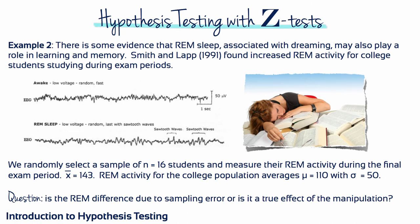Example 2: There's some evidence that REM sleep, which is normally associated with dreaming, may also play a role in learning and memory. Smith and Lapp found increased REM activity for college students studying during exam periods. We randomly select a sample of n equals 16 students and measure their REM activity during the final exam period, and get a sample mean of 143. REM activity for the college population averages 110, with a standard deviation of 50. Is the apparent difference in REM due to random variation, or is it a true effect of additional learning and memory associated with preparation for final exams?